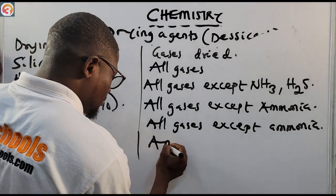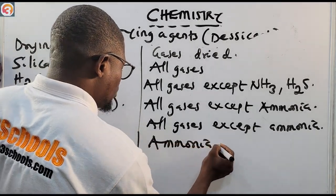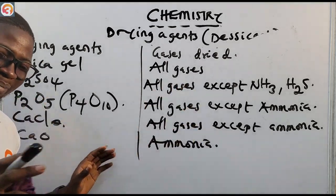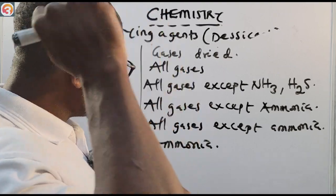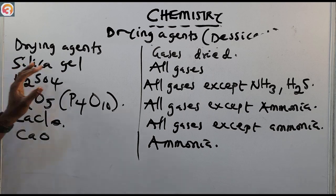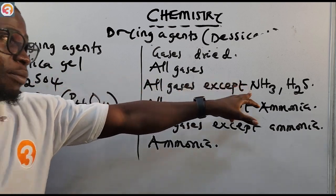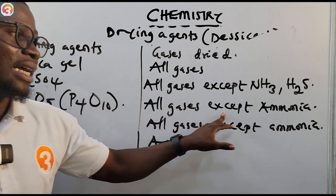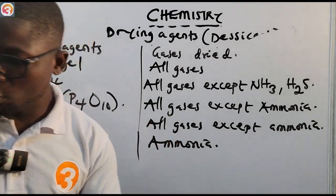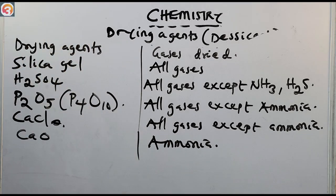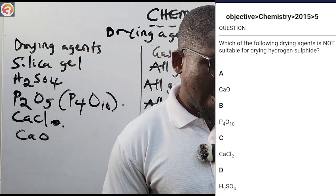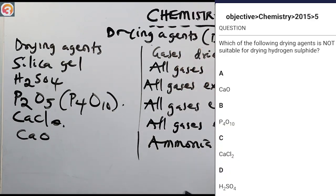CaO — calcium oxide — dries ammonia gas comfortably. So to summarize: silica gel dries all gases; H2SO4 dries all gases except ammonia and H2S; P2O5 dries all gases except ammonia; CaCl2 dries all gases except ammonia; and CaO dries ammonia gas.